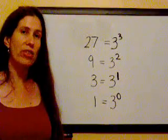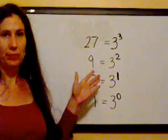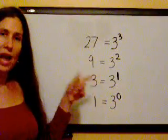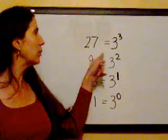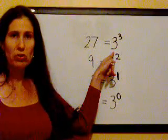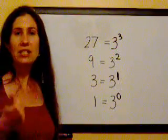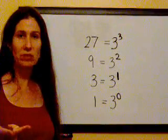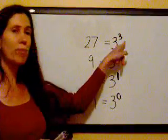So I'm going to demonstrate it with three. Three to the zero power is one. So if you look at this patterning, we know that 27 is equal to 3 cubed, which, so 3 times 3 is 9, and 9 times 3 is 27. So 3 to the third power is 27.